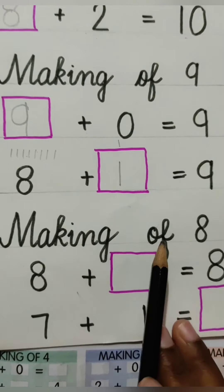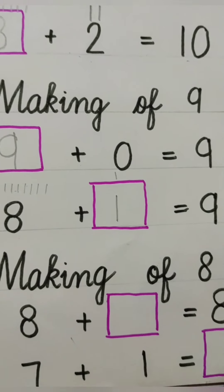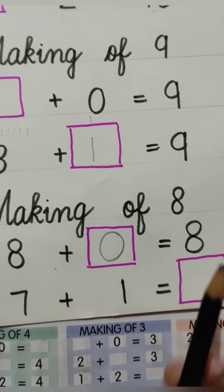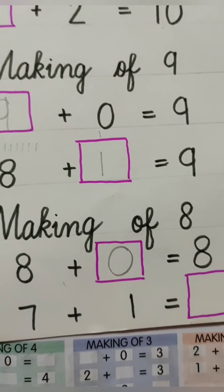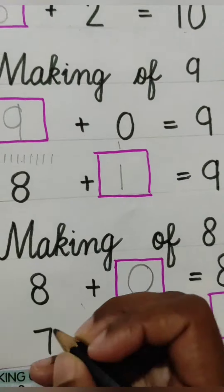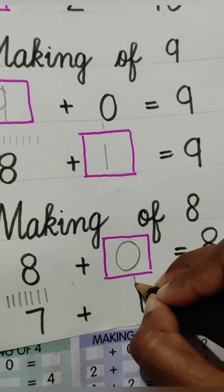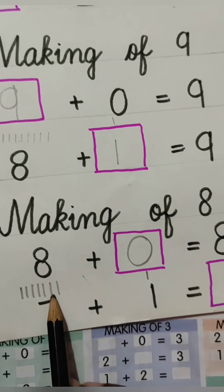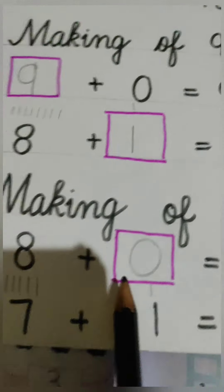Making of 8. अब हम लोग numbers को add करके 8 बनाएंगे. 8 plus blank is equal to 8. 8 में कितना जोड़ने से 8 बनता है? 0. जब किसी number में हम लोग 0 जोड़ते हैं, तो हम लोग को क्या मिलता है? Same number. So 8 plus 0 is equal to 8. 7 plus 1 is equal to कितना? Draw 7 lines, then 1 more. Count together: 1 through 8. So we will write here 8. Children, first two questions I have explained here.